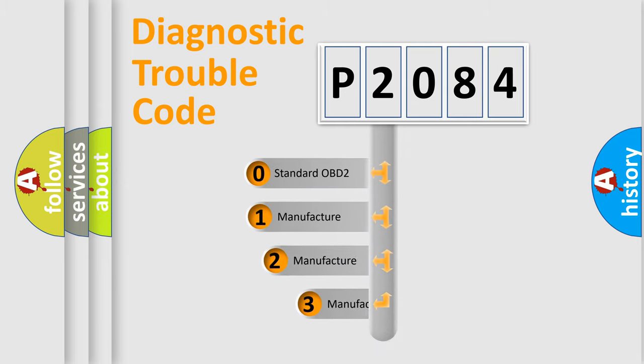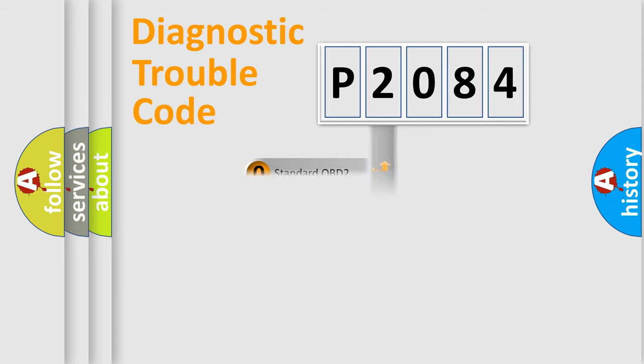If the second character is expressed as zero, it is a standardized error. In the case of numbers one, two, three, it is a manufacturer-specific expression of the car error.